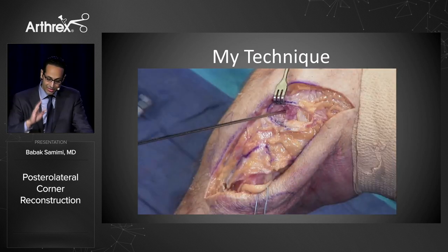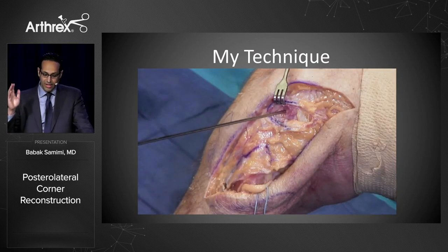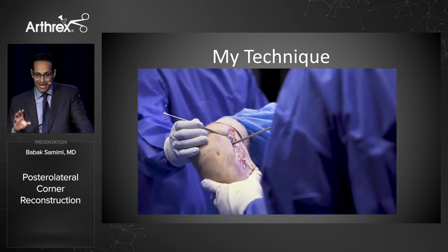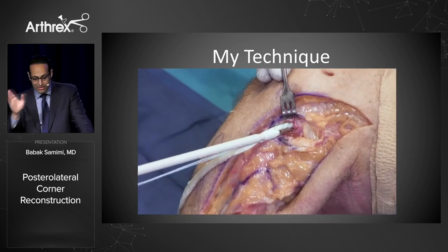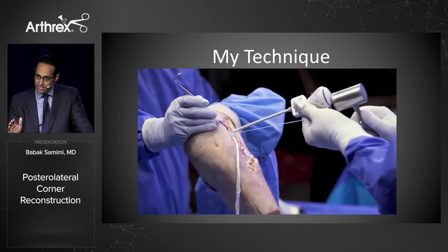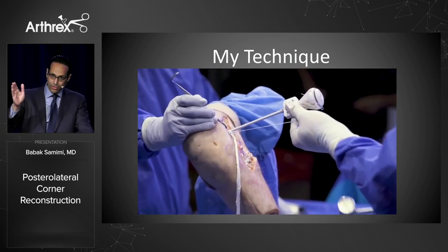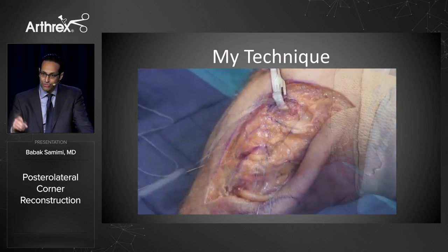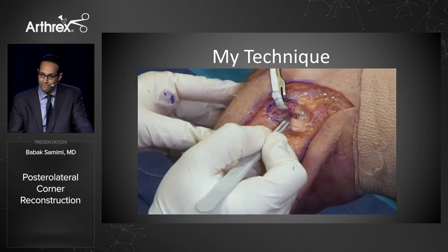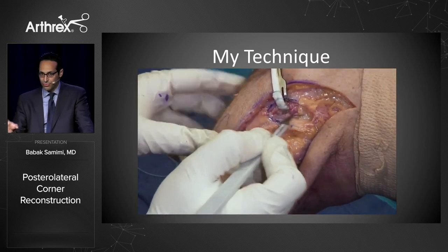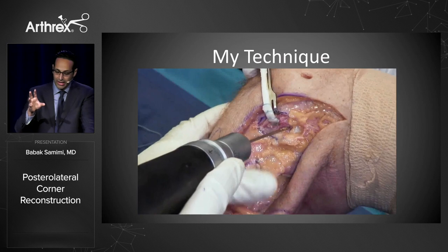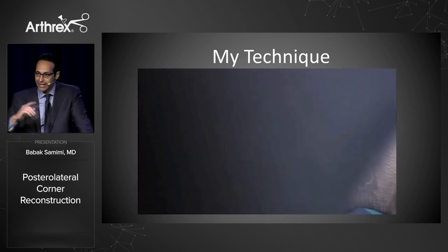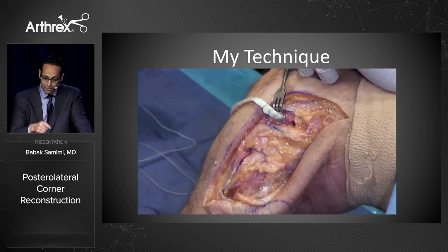I start with the most anterior structure: the popliteus socket on the lateral epicondyle. You have to be cognizant of your other anatomy, but because the ACL tunnel is typically going to be lower, you're very safe — just aim a little bit more superior and proximal and you won't hit your tunnel. Size your graft, anchor down the first socket, and the rest follows. You can create all the sockets first and then pass the graft at the end.